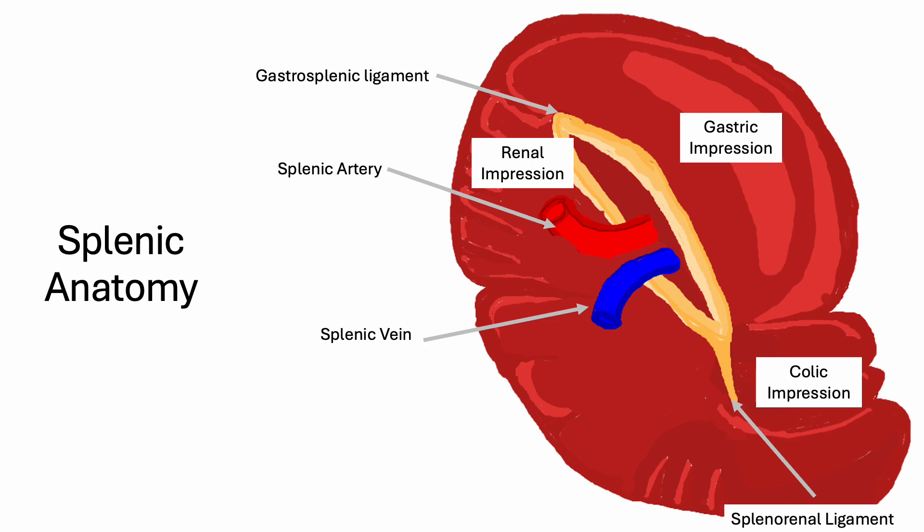The previous picture showed the spleen, the liver, and the vasculature without the other organs, but the spleen is adjacent to many organs. Superiorly it is adjacent to the diaphragm. Laterally it lies against the rib cage.